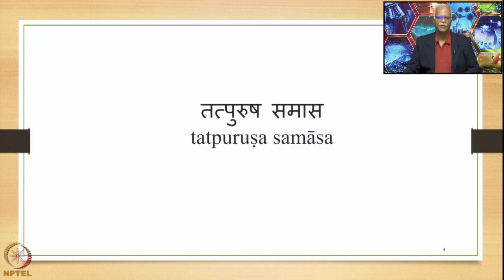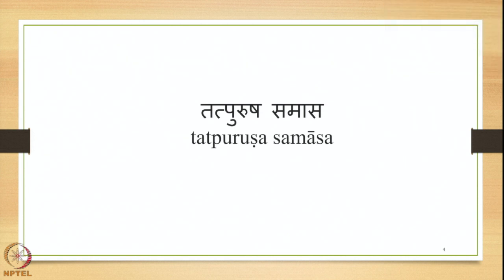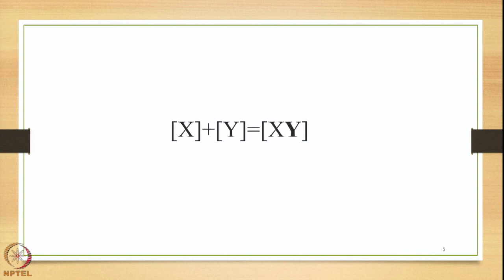We are dealing with the Tatpurusha Samasa, which is one of the very important Samasas in Sanskrit. The Tatpurusha Samasa structure is shown in the form of an equation where we have X and Y as the two constituents which appear independently, separately, but in an interlinked manner. They then get compounded, integrated, and merged as one unit XY.